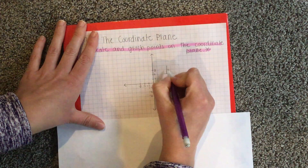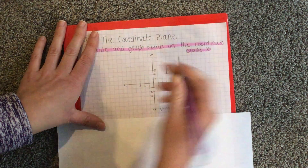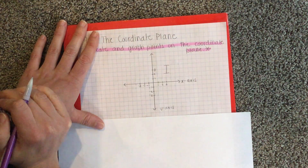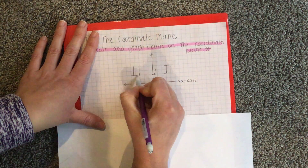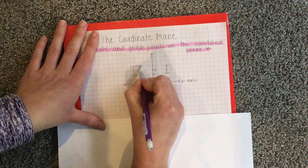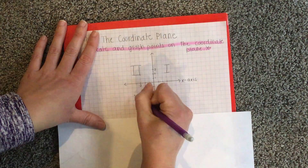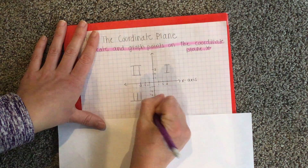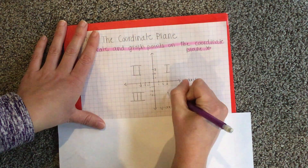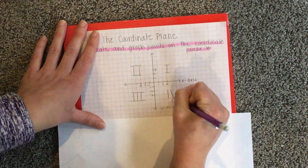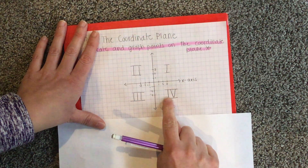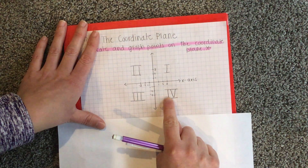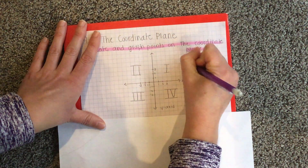The first quadrant is in the upper right-hand corner — that's Roman numeral one. The second quadrant is to the left of that — this is two. This is quadrant three. And quadrant four is IV. This stands for five, but if there's an I in front of it, it means take away one to get four.